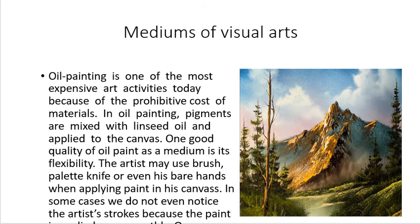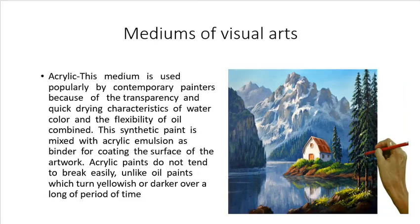The next medium is oil painting, one of the most common mediums used during the late 80s and 90s and even today. Painting is one of the most expensive art activities today because of the prohibitive cost of materials. In oil painting, pigments are mixed in linseed oil and applied to canvas. One good quality of oil paint is its flexibility — the artist may use a brush, palette knife, or even bare hands when applying paint to canvas.